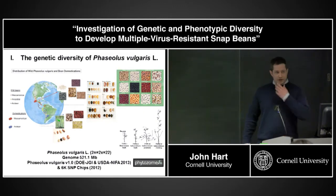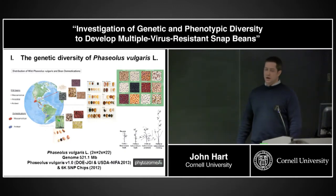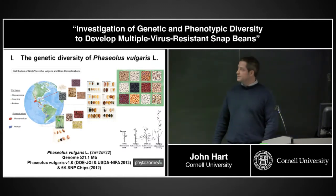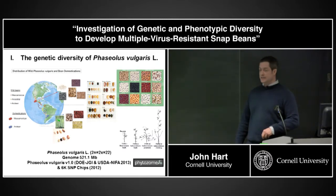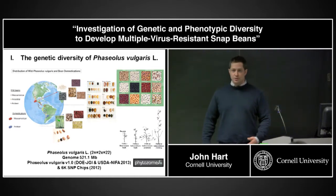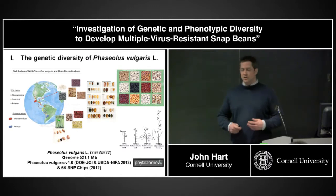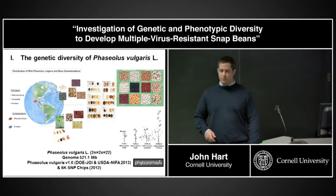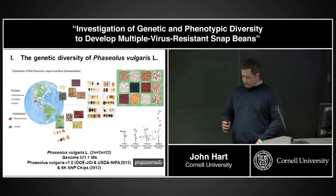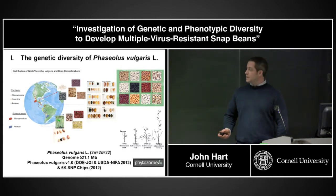Phaseolus vulgaris, the common bean, is an incredibly important source of nutrients — protein, complex carbohydrates, iron and zinc — for people all over the world, but especially smallholder farmers in places like Latin America and East Africa. The diversity of Phaseolus vulgaris has allowed it to adapt to many different agroecological production systems, from the humid tropics to upland dry areas of North America. The wild progenitor can be found from northern Mexico to mid to northern Chile.